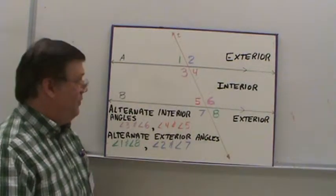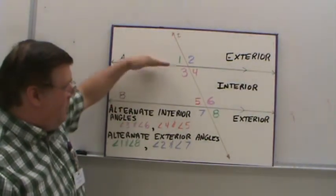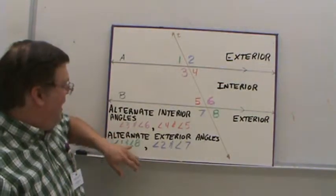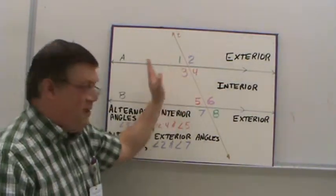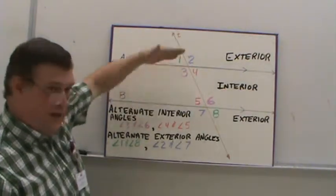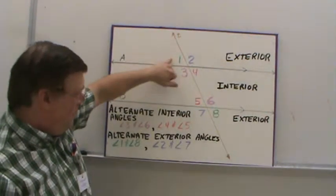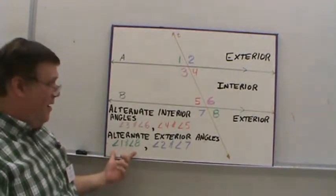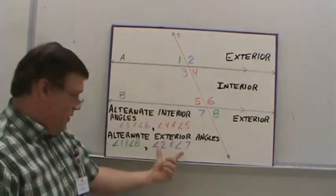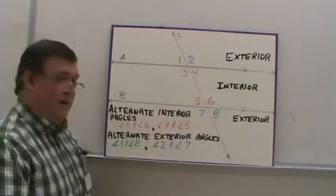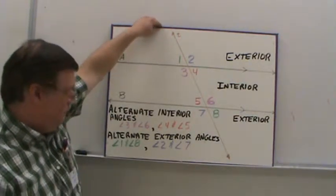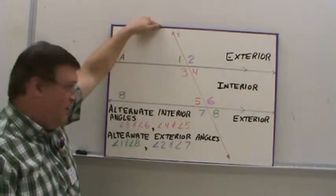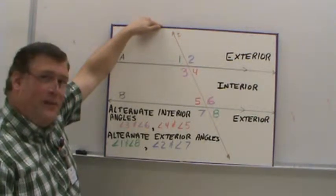Alternate exterior angles work the same as the interior. They have to be on opposite parallel lines, A or B, and on opposite sides of the transversal, but they have to be outside of the parallel lines. Angles one and eight are an alternate exterior pair; angles two and seven are an alternate exterior pair. And alternate interior and alternate exterior pairs are going to be equal.